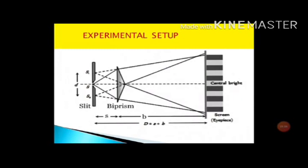Here is the experimental setup for Fresnel biprism. There is an original source S which is a monochromatic source of light. When light falls from this source on the upper face of the biprism, it appears to come from the virtual source S1. When it falls on the lower face of the biprism, it appears to come from the virtual source S2 due to refraction. So we have produced two virtual sources S1 and S2, which behave as coherent sources.